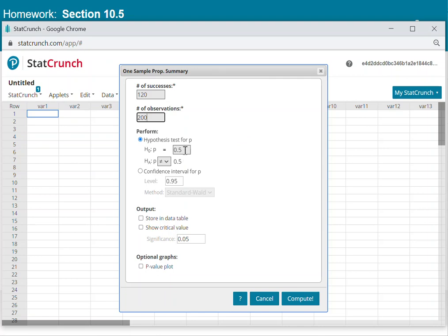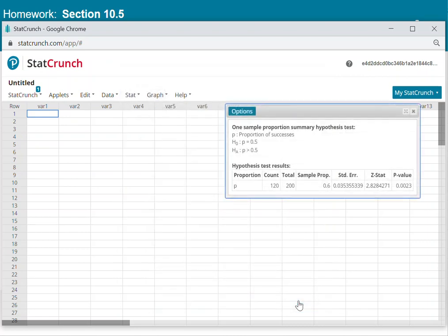Notice we've got P is 0.5. Now here, make sure you change this to greater than 0.5, greater than 50%. That would make a majority. And then we can go ahead and hit Compute.